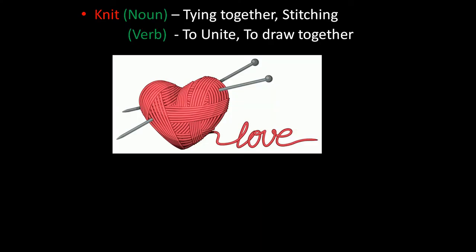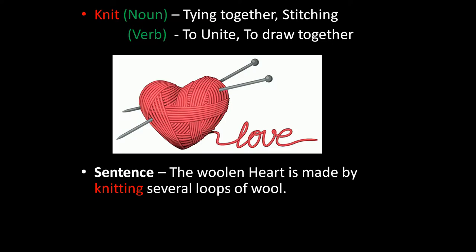The photo shows several loops of wool stitched together or knitted together to form the shape of a heart. The sentence is: the woolen heart is made by knitting several loops of wool — that is, they are made by stitching several loops of wool.